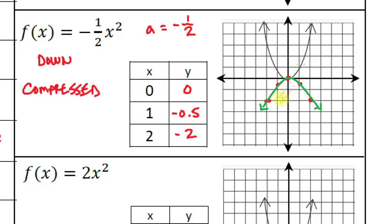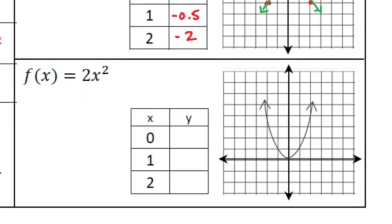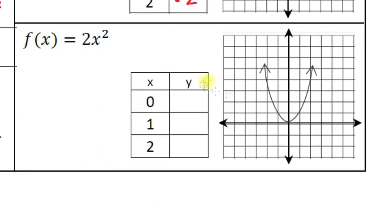Comparing to the parent shape, you can see the graph is getting compressed — squished and wider. When you go two units right, it only dropped about one and a half units, whereas the parent dropped four. It's getting wider; if you kept drawing this parabola it would spread out much farther compared to the original. It is definitely compressed.